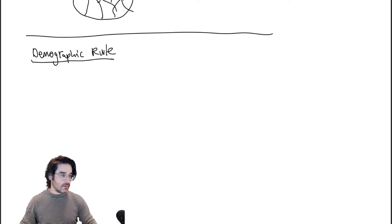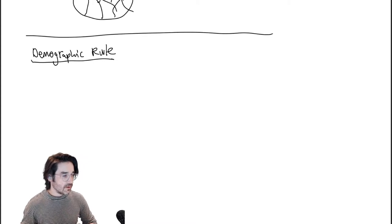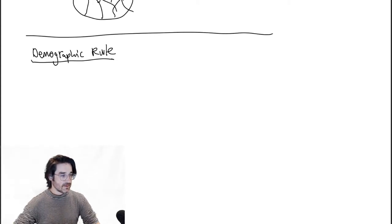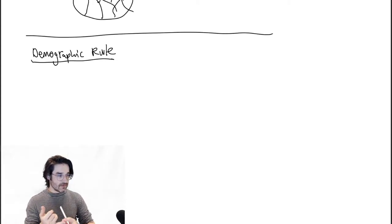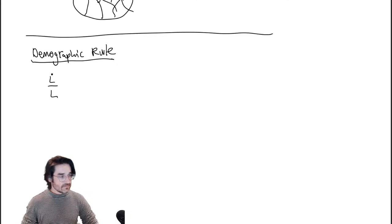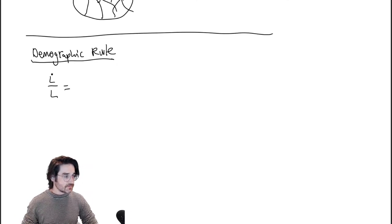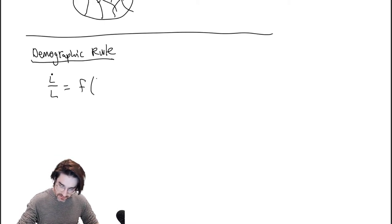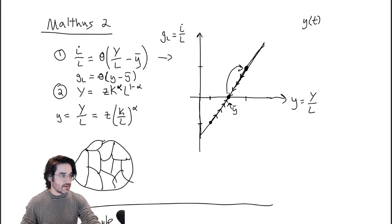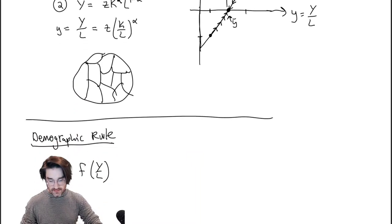So first we're going to try and change that demographic rule. It's not a rule as in you have to do this — it's an equation that governs how population evolves. What we're going to do is say L-dot-over-L equals something else — some other function of Y-over-L, rather than the original theta times (Y-over-L minus y-bar).